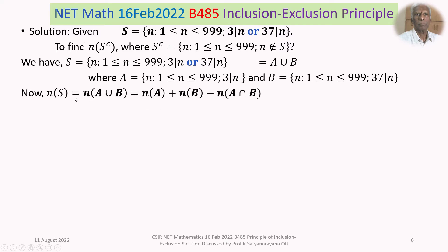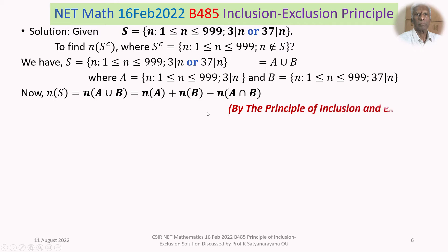If we find n(S), then n(S complement) = 999 − n(S), which is easy to compute. Since S = A ∪ B, we have n(S) = n(A ∪ B) = n(A) + n(B) − n(A ∩ B), and this is by the principle of inclusion and exclusion.